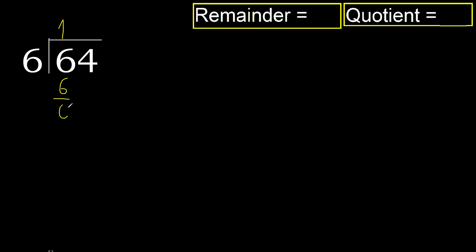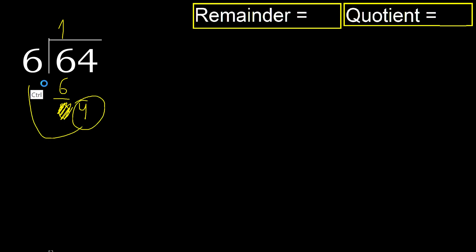6 minus 6 is 0. Next, eliminate 0 on this side. The remainder is less, therefore next.